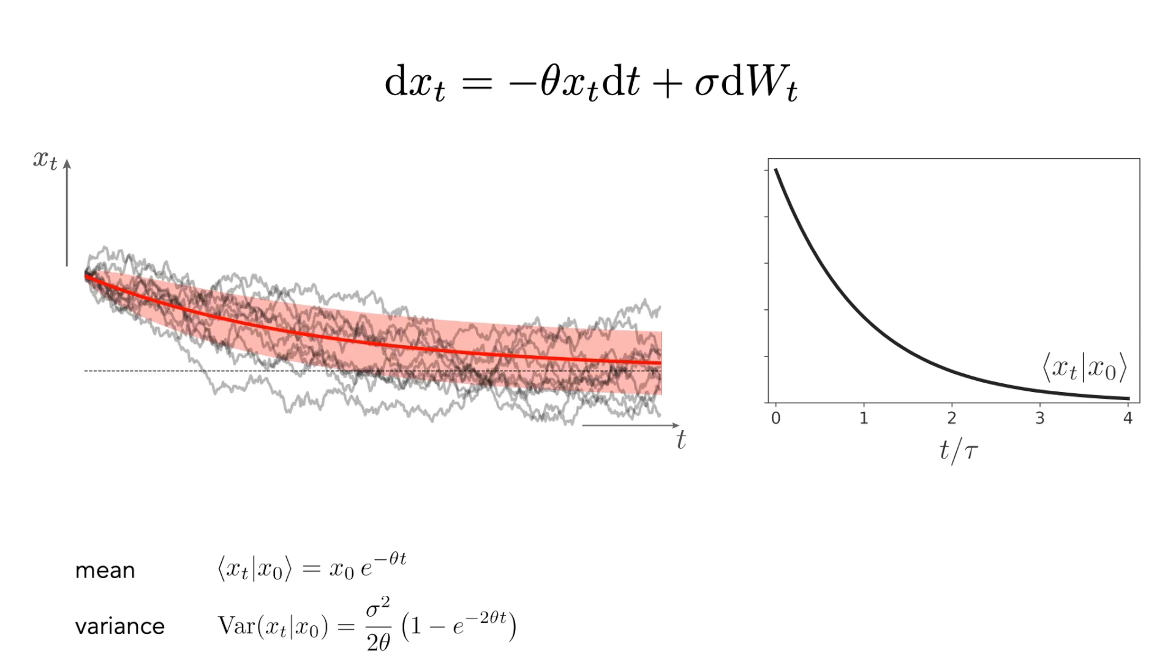It is also insightful to look at how the standard deviation changes over time, since it's a direct measure of the width of the x distribution. Its general expression, which is the square root of the variance expression, is not particularly illuminating, so let's consider the short and long time limits.